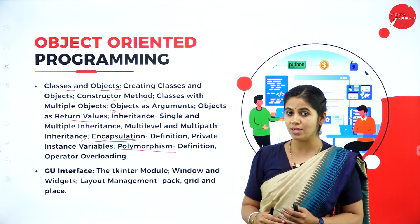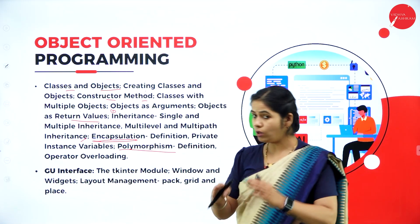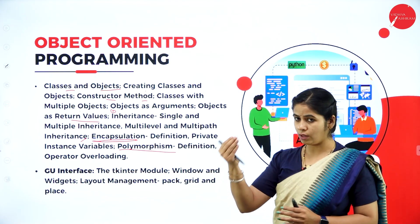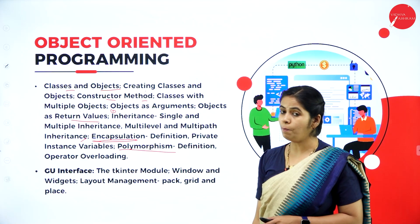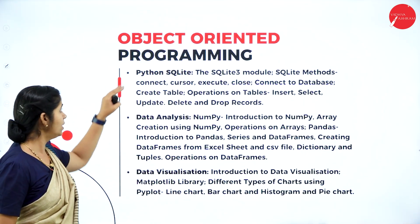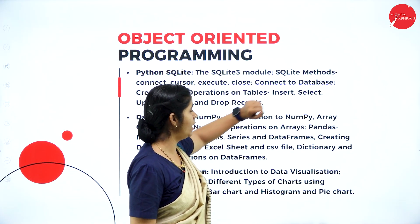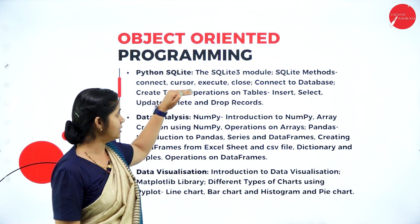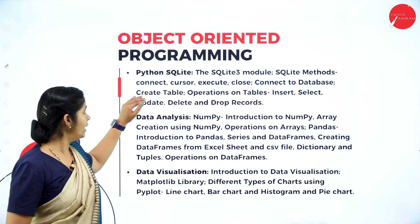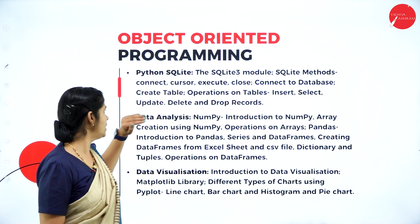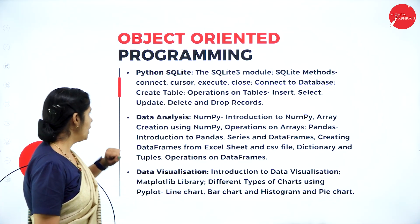Also in Unit 3, we discuss Graphical User Interface (GUI) using the Tkinter module: windows, widgets, layout management, packages to import, grids, and placing interface windows. Next, Python SQLite for database management: what SQLite is, its modules, methods for connecting through SQLite, cursor execution, connecting to the database, and table operations — creation, insertion, selection, update, deletion, and dropping tables.